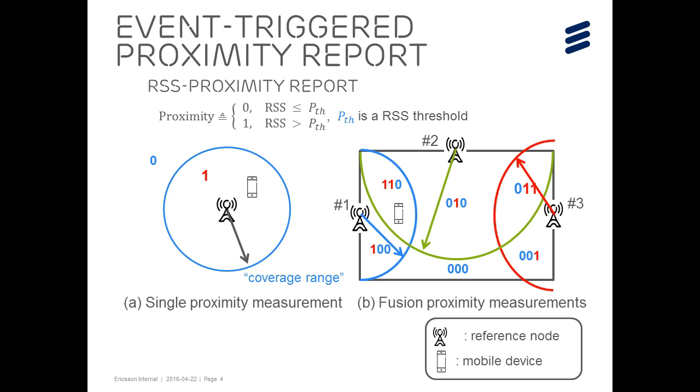The proximity report obtained in this way indicates the coverage area of a certain reference network node. Then, a proximity vector which contains proximity information of several reference network nodes gives the approximate area of the target device.